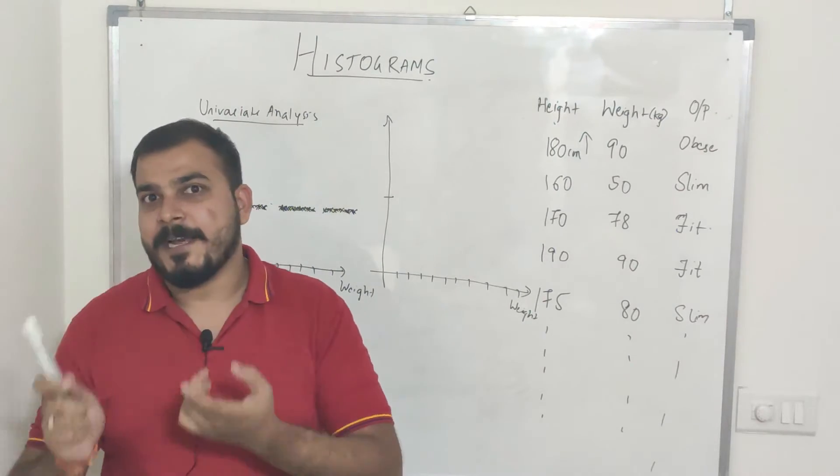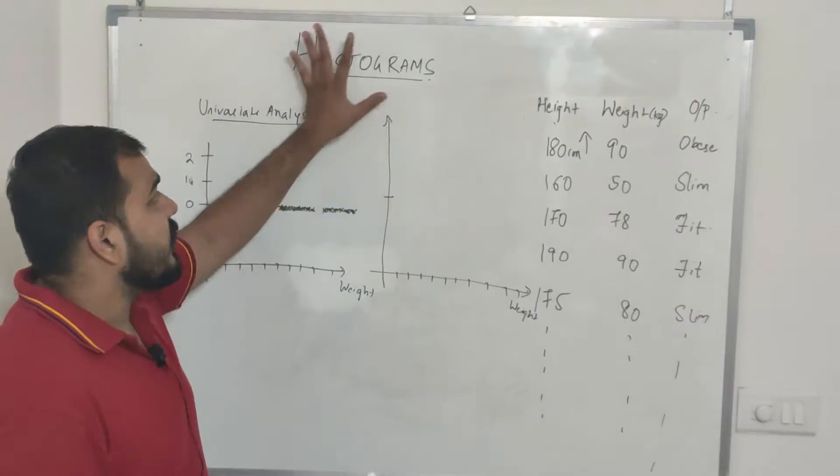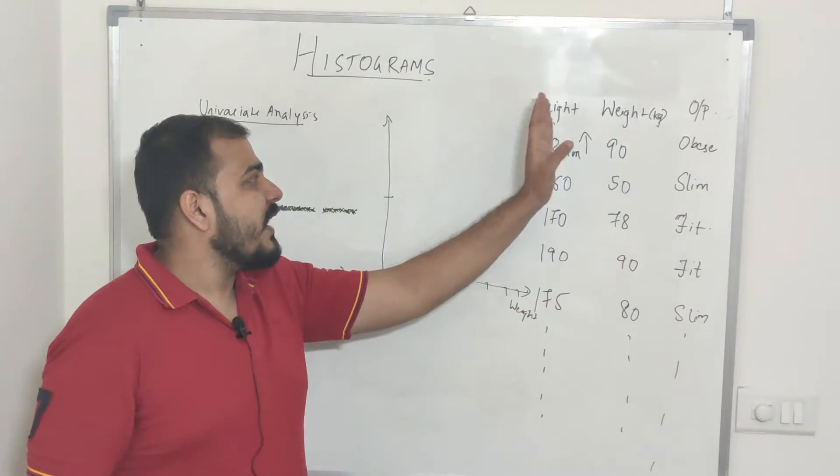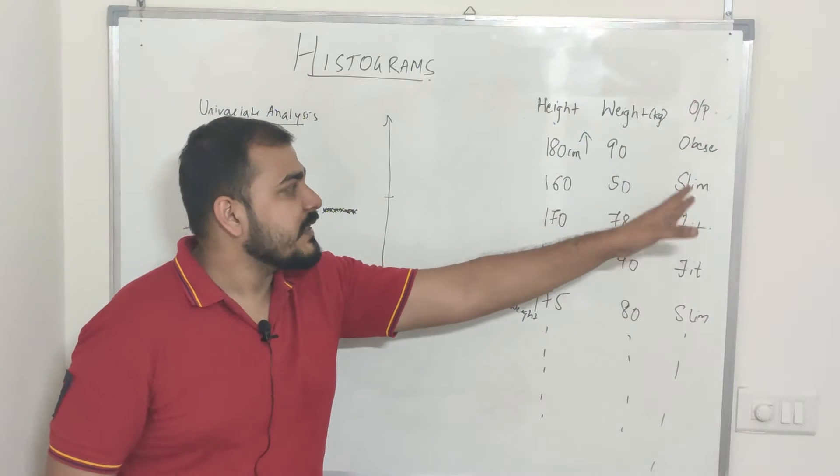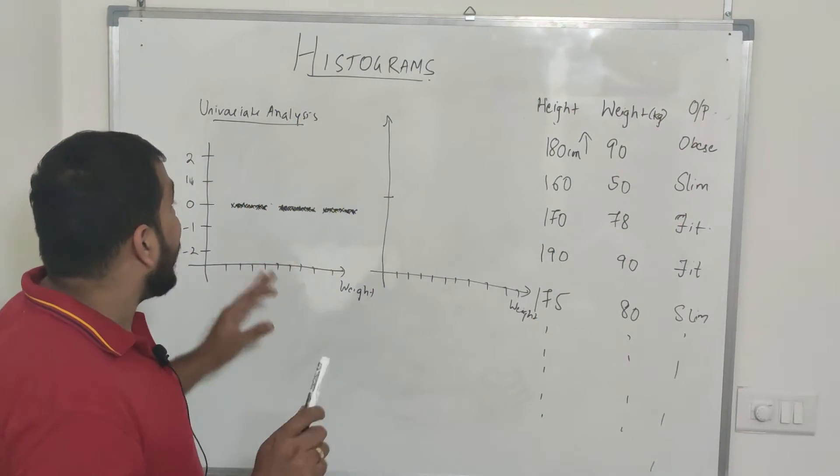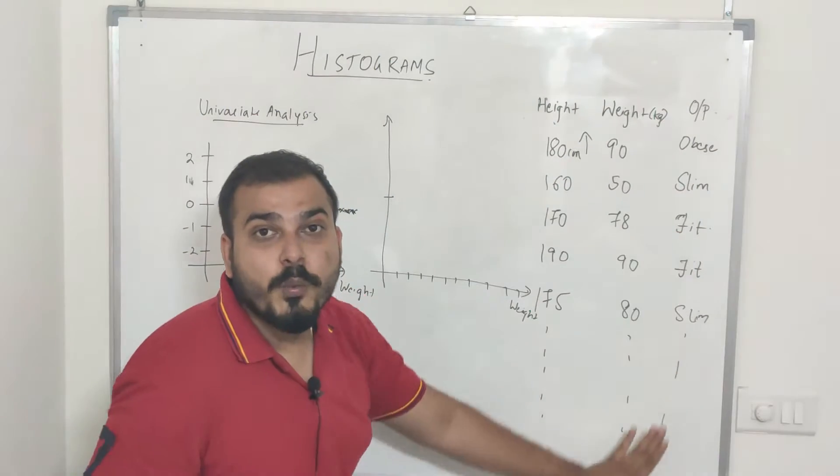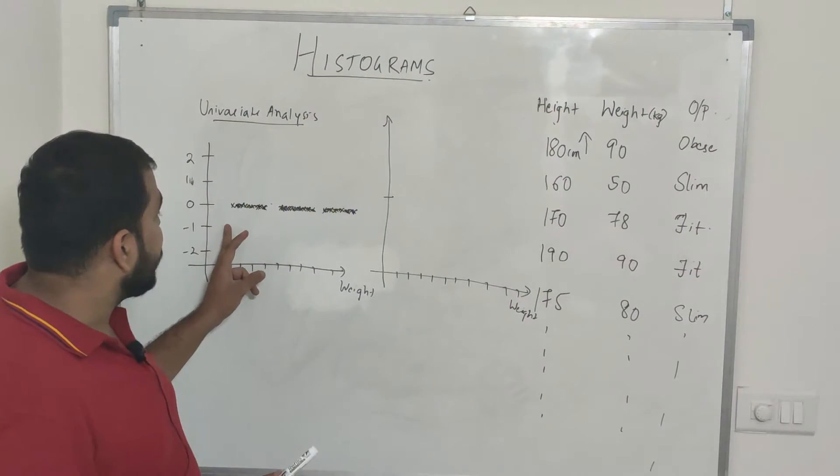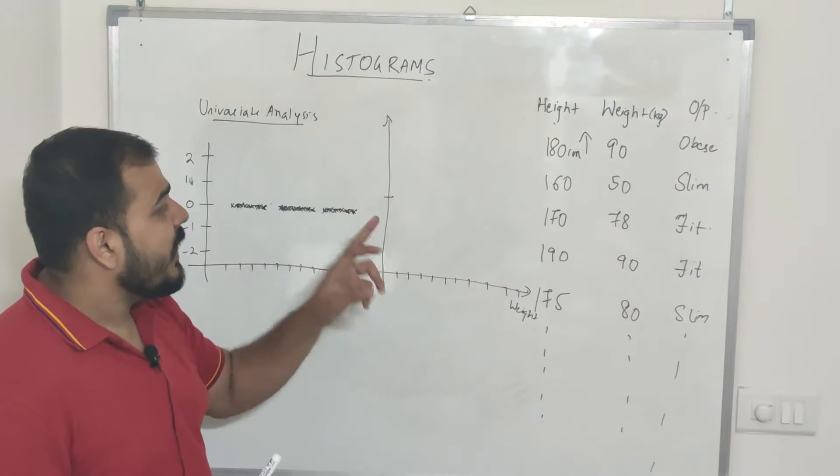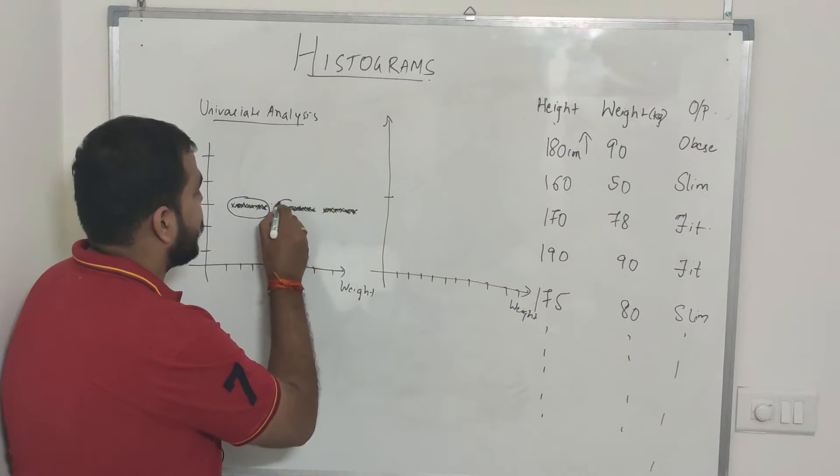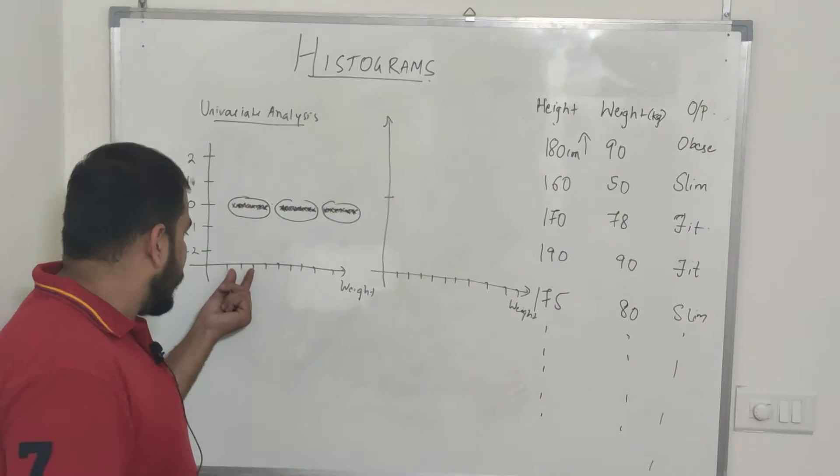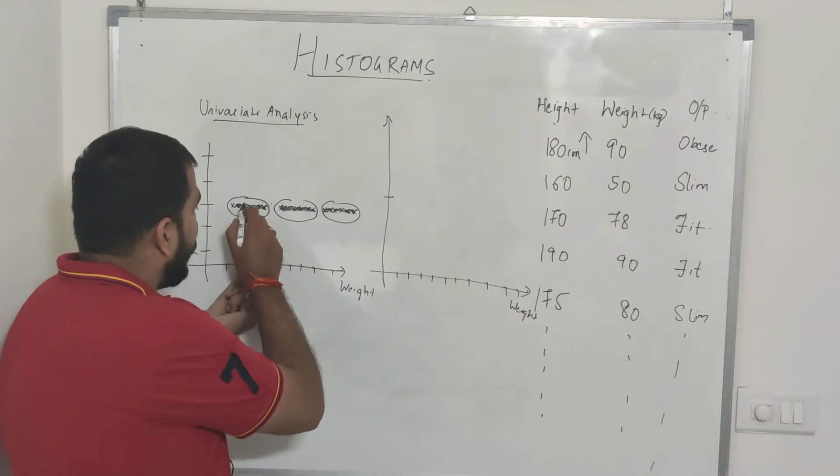Now if I talk about histograms, I hope you remember the univariate analysis. I've used the same dataset where I have height and weight and the output is either obese, slim, and fit. If I consider the univariate analysis by considering only this weight feature, this is my weight feature. This is basically the points that are populated, and this one is slim, this is fit, and this is obese. Within this weight range there's so many number of points.